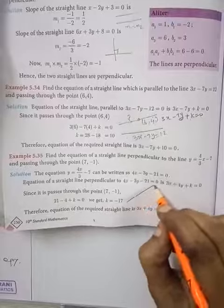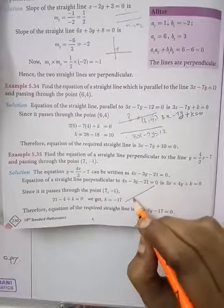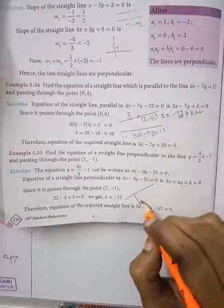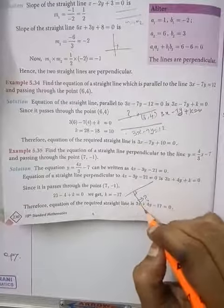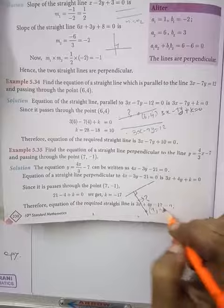The line's equation is given. We need to write the line's equation. What condition? Perpendicular. Passing through one point 7, minus 1.